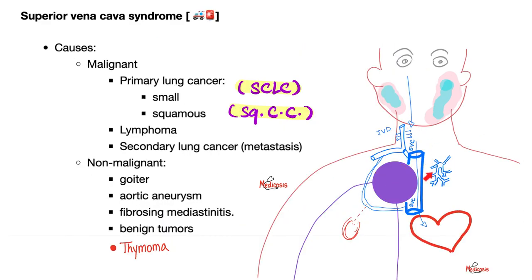What are the causes of superior vena cava syndrome? Could be malignant causes or non-malignant causes. Malignant causes could be primary lung cancer at the apex of the lung, could be lymphoma — especially the paratracheal lymph node — or metastasis to the lungs. Non-malignant causes include goiter of the thyroid gland, aortic aneurysm, fibrosing mediastinitis, and benign tumors like thymoma.